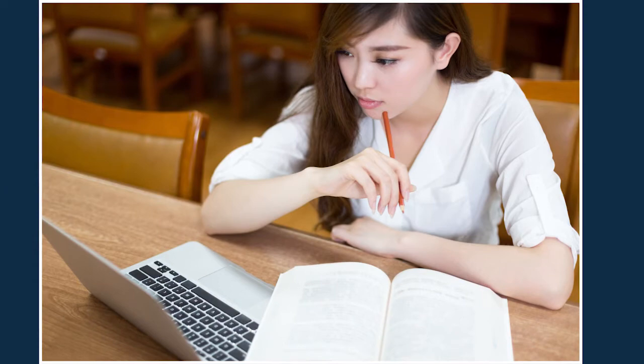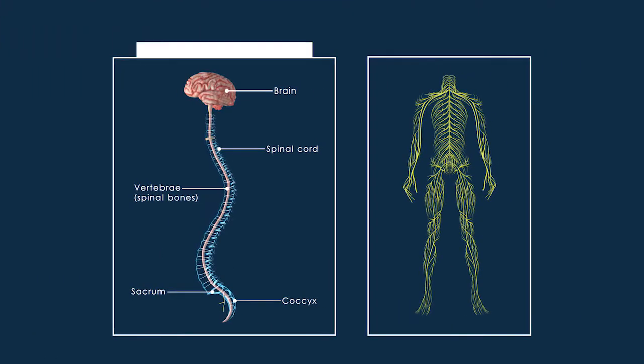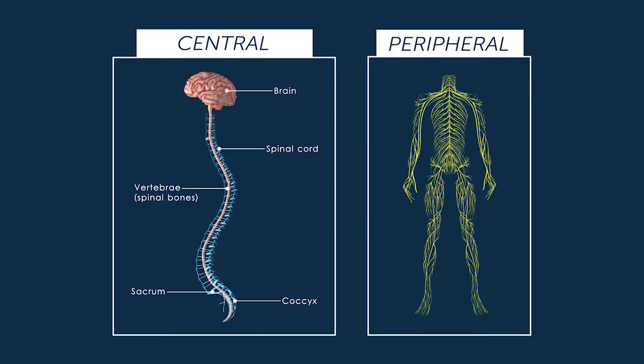The nervous system is divided into two parts: the central nervous system and the peripheral nervous system.